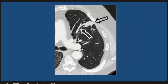Here is round atelactasis in a patient with asbestosis. We see a left lung mass abutting the pleura, with a comet tail of bronchovascular markings extending into the mass — the classic comet tail sign.